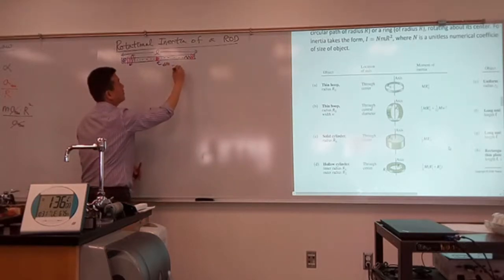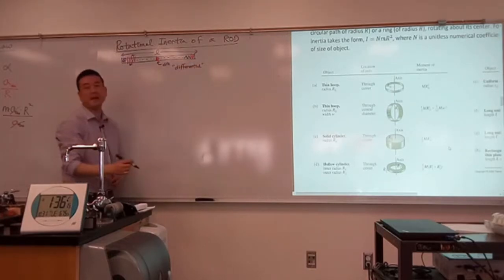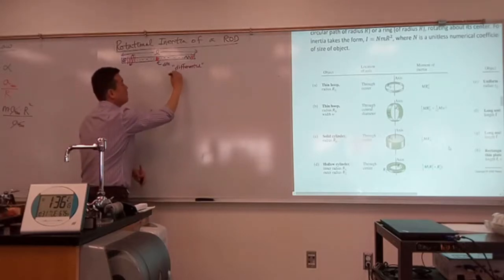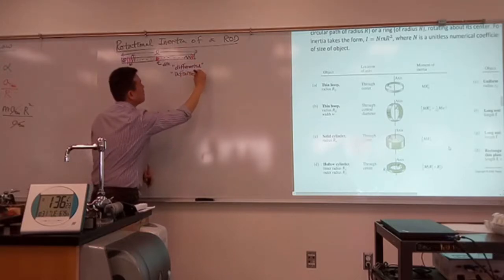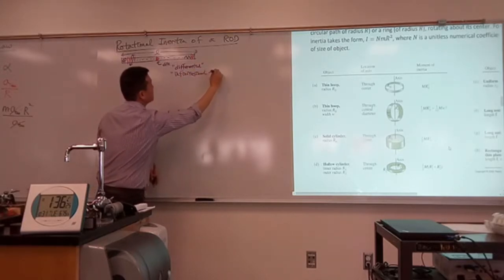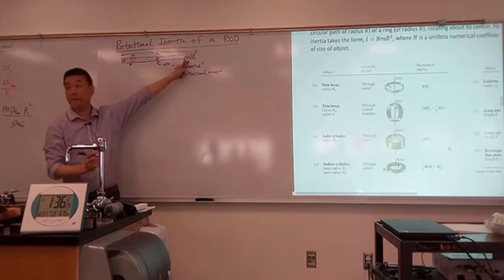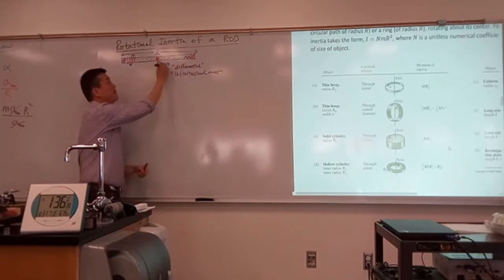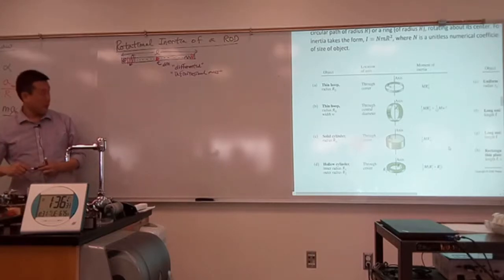This is sometimes called a differential — but the term I like better is infinitesimal mass. This is some quantity that is related to the whole mass, but it's a very tiny, very small portion of that mass. So this portion of the ruler has this much mass.